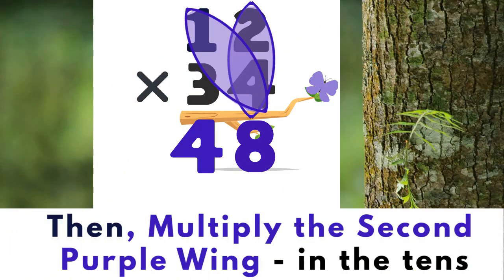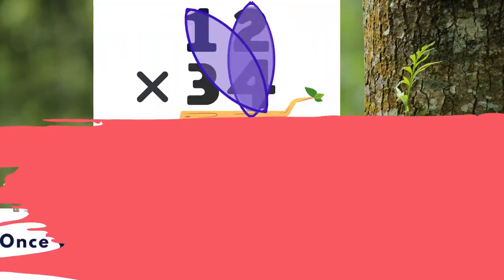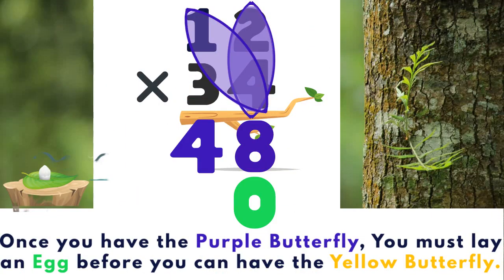Then, multiply the second purple wing in the tens place. One times four equals four. Once you have the purple butterfly, you must lay an egg before you can have the yellow butterfly, so you add a zero.